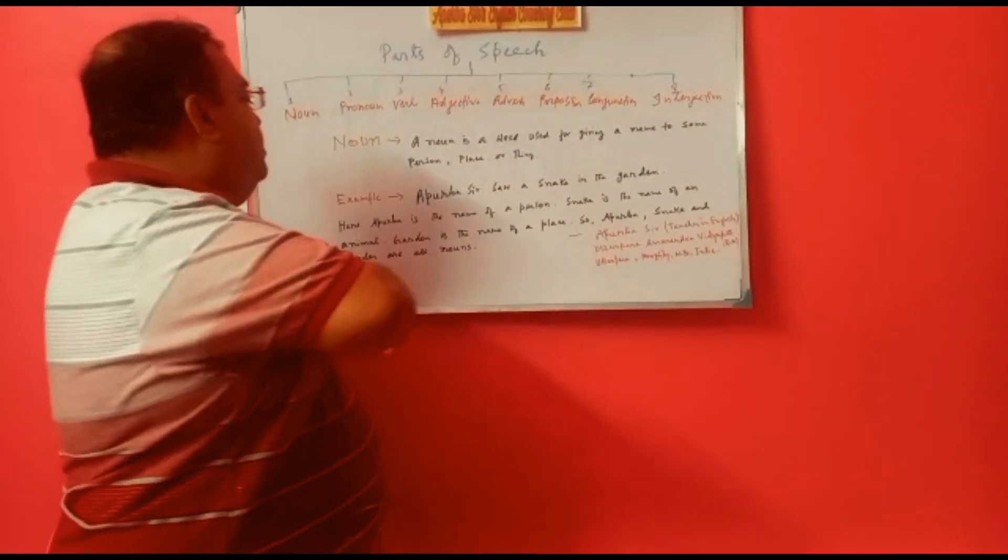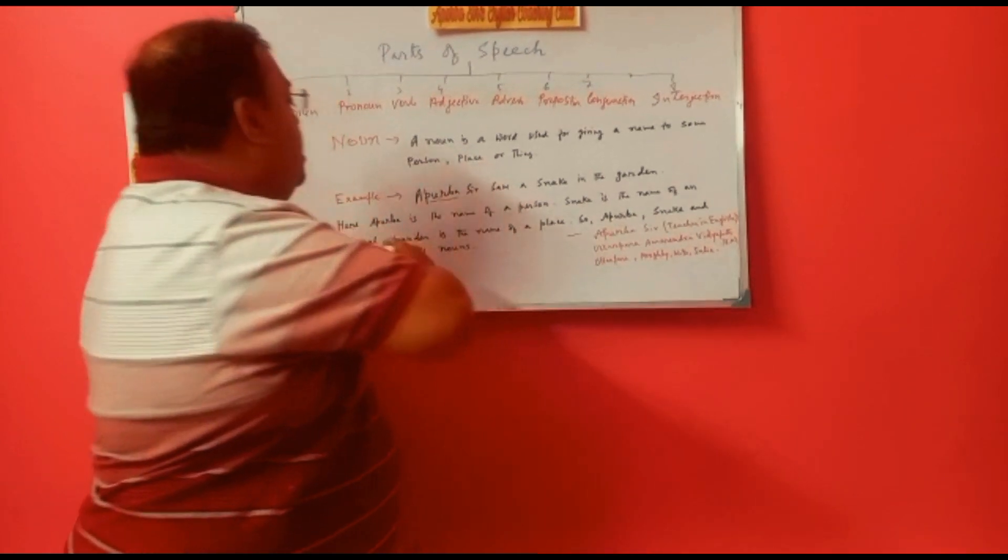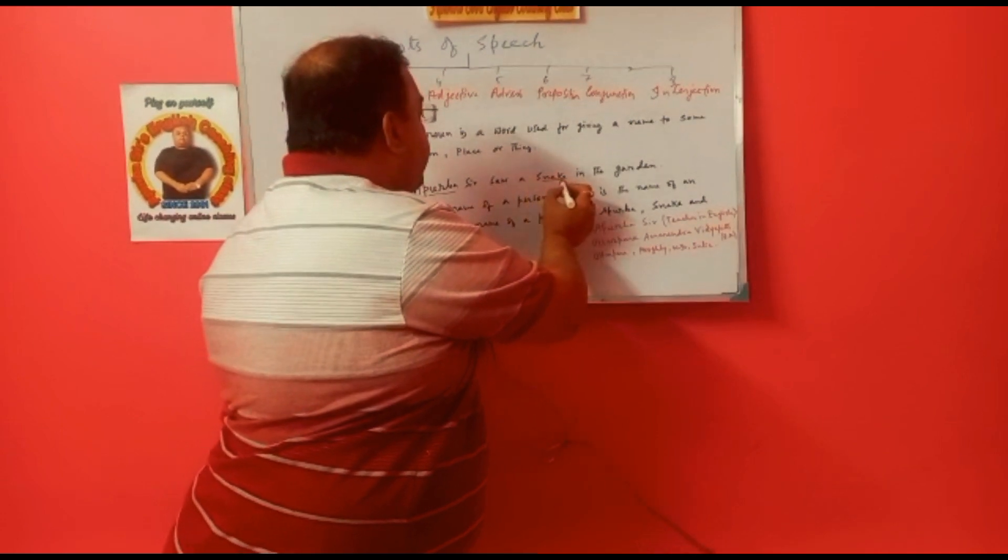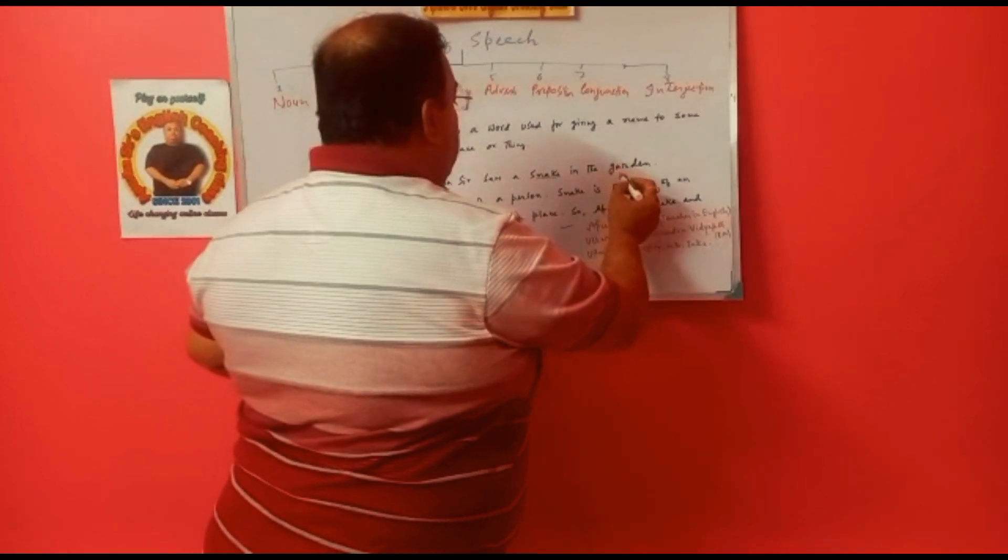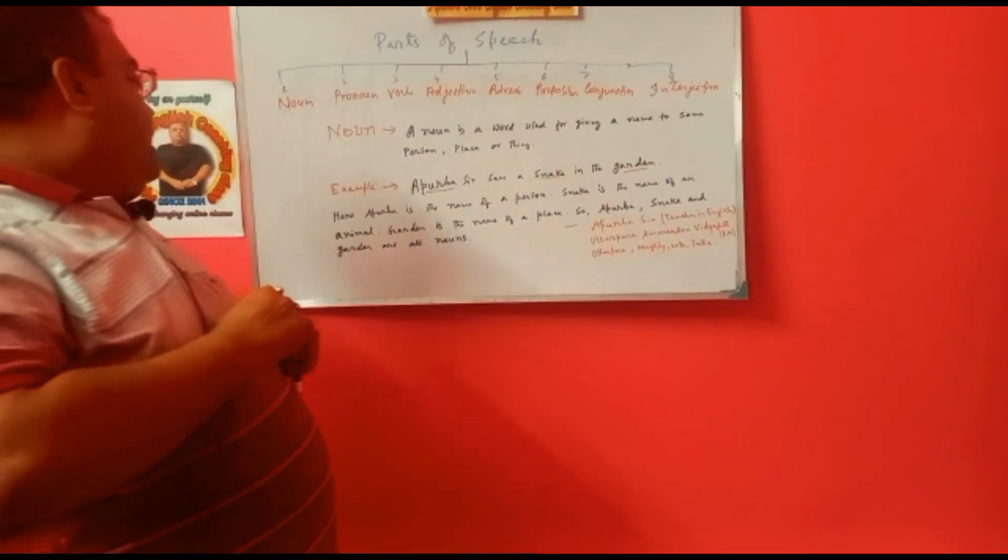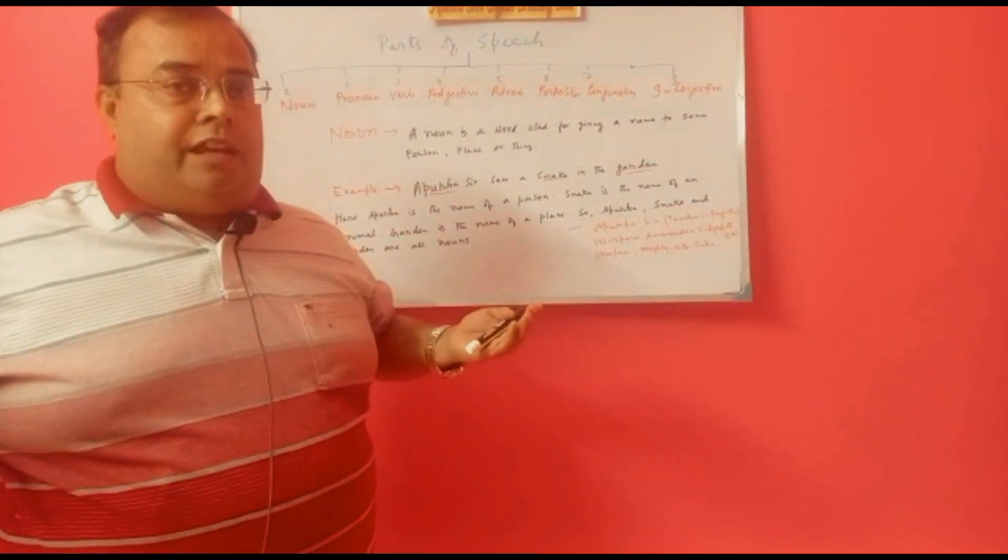In this example, Apurvosar is the name of a person, snake is the name of an animal, and garden is the name of a place. So Apurvosar, snake, and garden are all nouns, my dear friend.